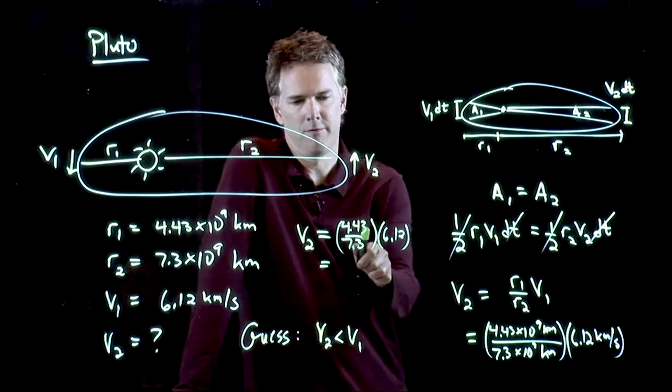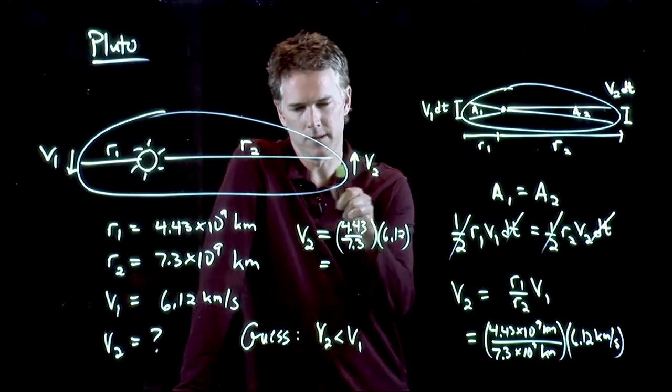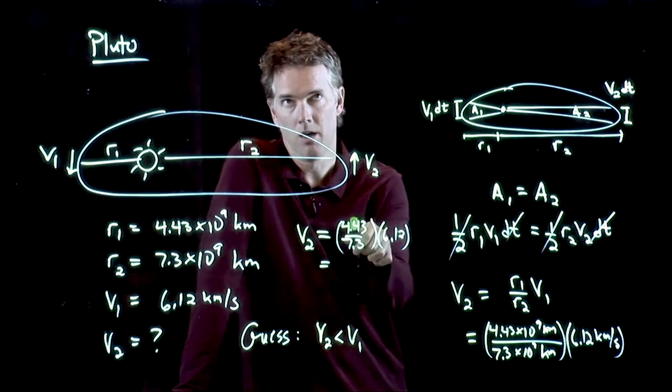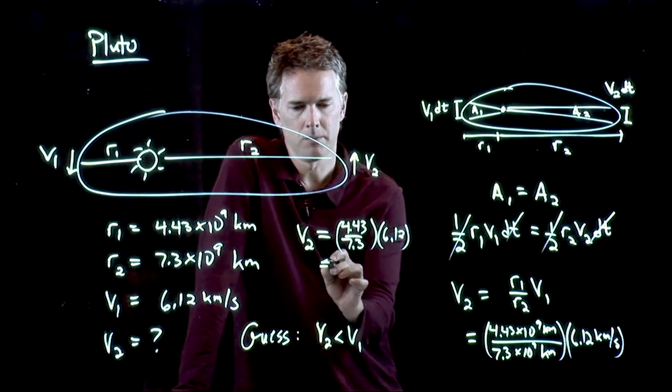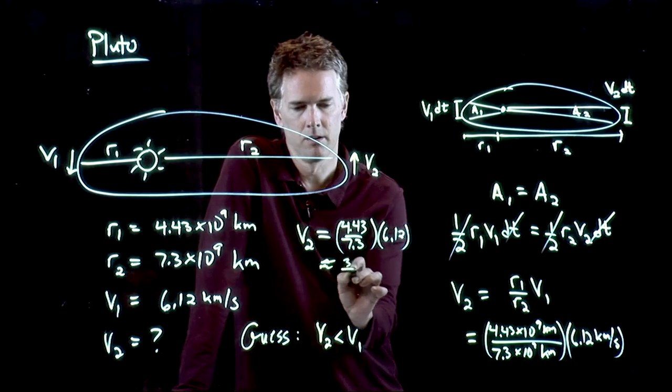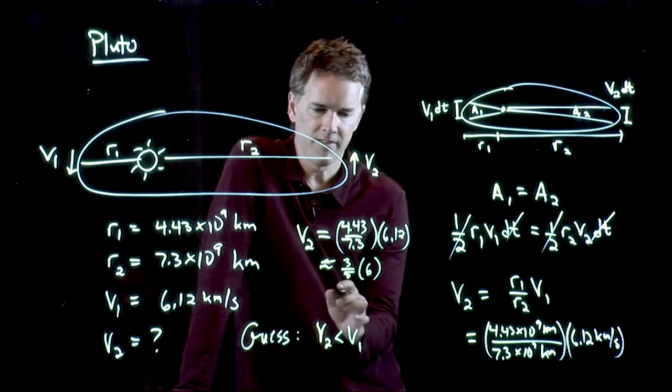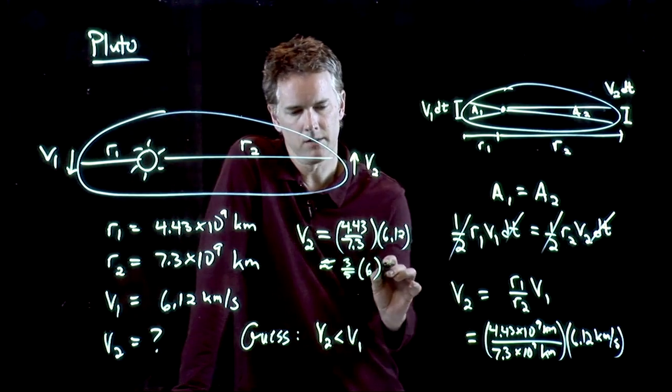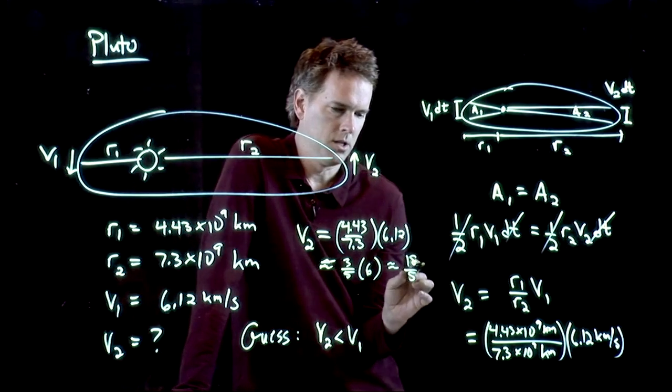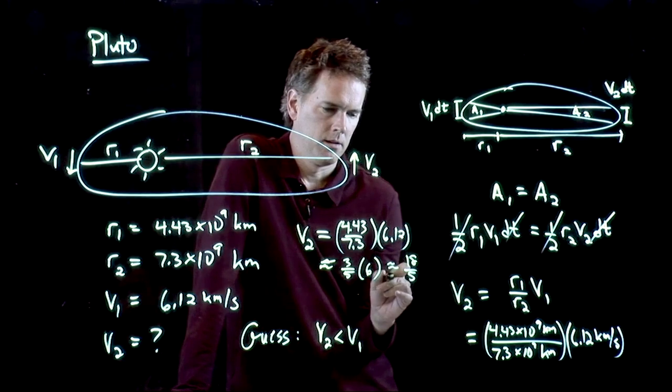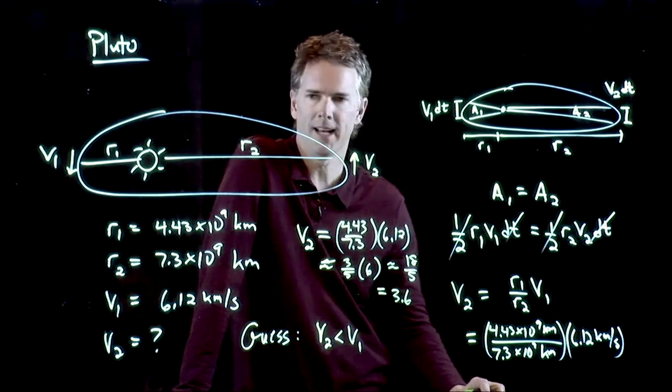Let's see. This is 4.5 over 7.5, which is, if I divide those by 15, that would be 3 over 5. So that's approximately three-fifths of 6. And three-fifths of 6 is what? Now that's 18 over 5, which is pretty close to 3.6. Anybody get an answer?